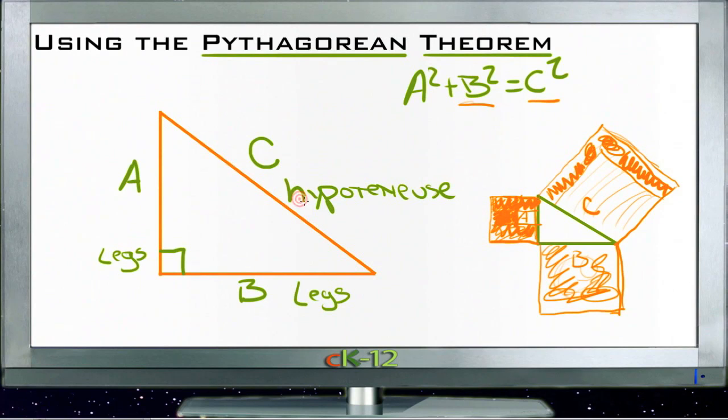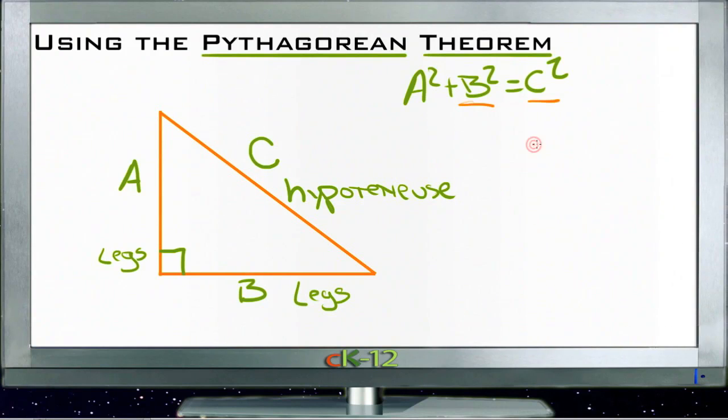Or we can use it the other way around. We can say suppose I have three numbers and I want to see if those three numbers could represent sides of a right triangle. For instance, could 3, 4, and 5 represent the lengths of three sides of a right triangle? Would that actually work?